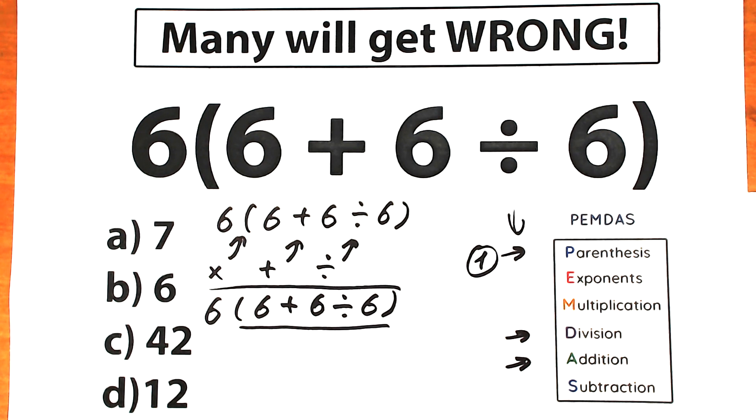What we should do first? We should divide or we should add? Let's look at it. Division has the higher position than addition. Division has the higher priority. It means that our second step after finding parentheses is division. We should divide 6 divided by 6. What do we have? We have 6 times 6 plus 1.